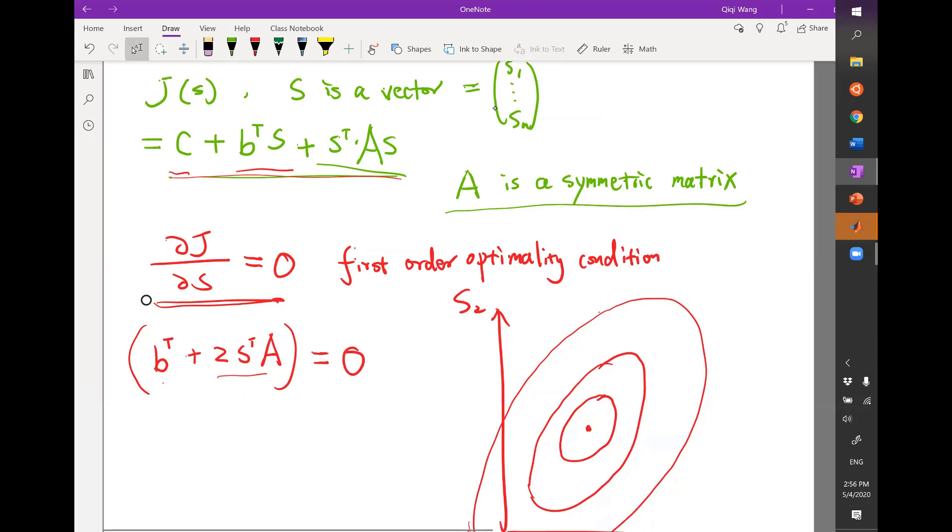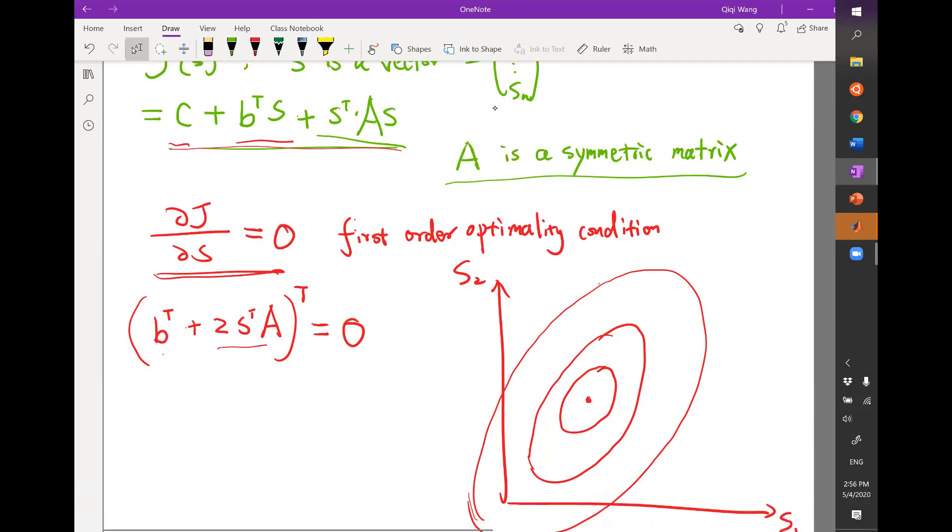And if you allow me to transpose the whole thing, the transpose of zero is zero. What you get is you have B transpose transpose which is B. And then when you transpose the product of a vector and a matrix, you put the transpose on the matrix and the vector, and you have to switch the order of the multiplication. So the 2 is a constant, it can move around in the multiplication. But you have to reverse the order of the matrix. So A transpose times S transpose transpose, which is S, equal to zero.